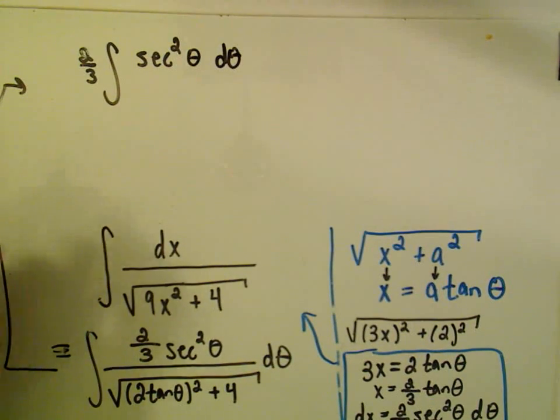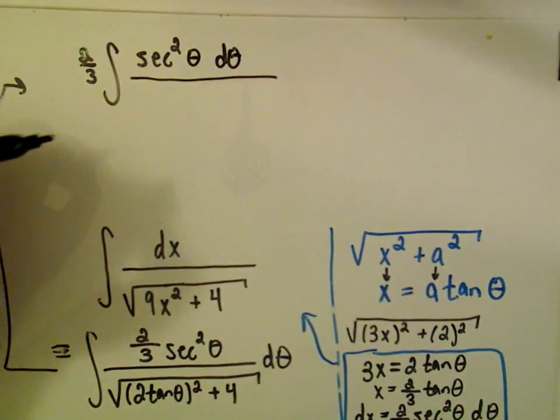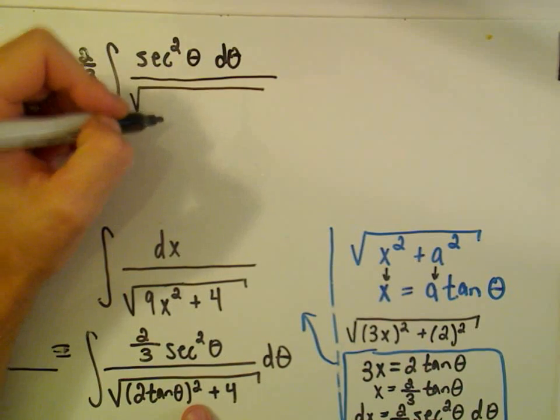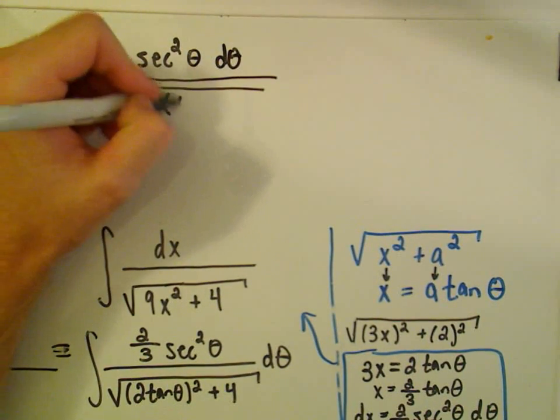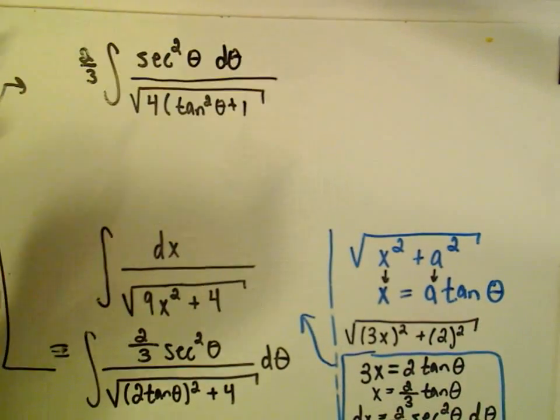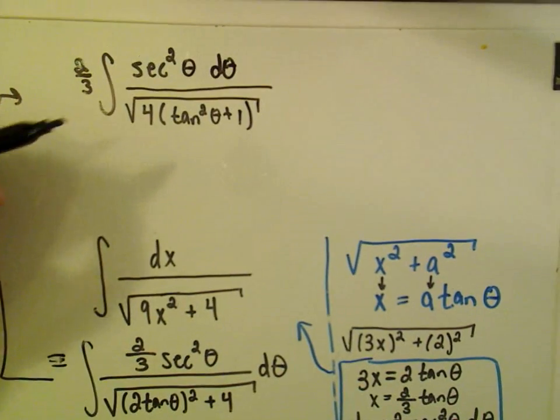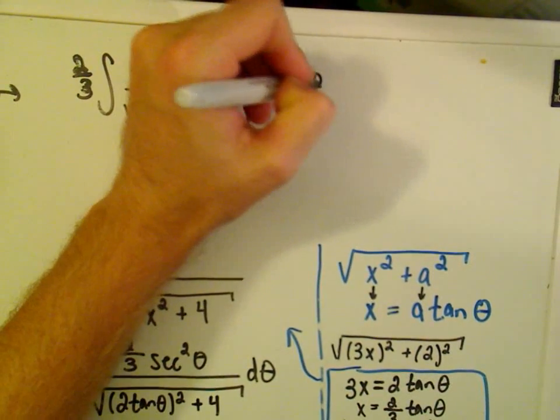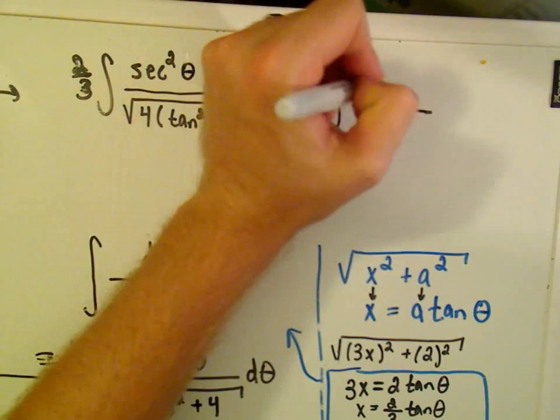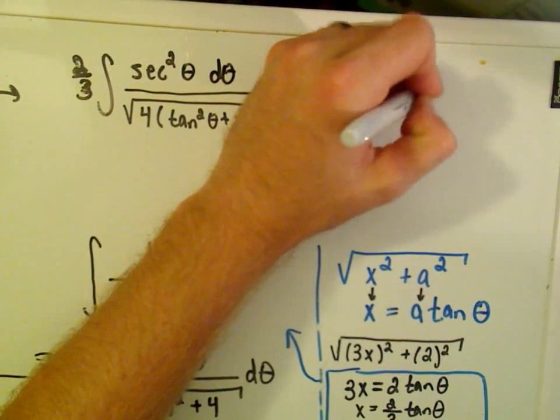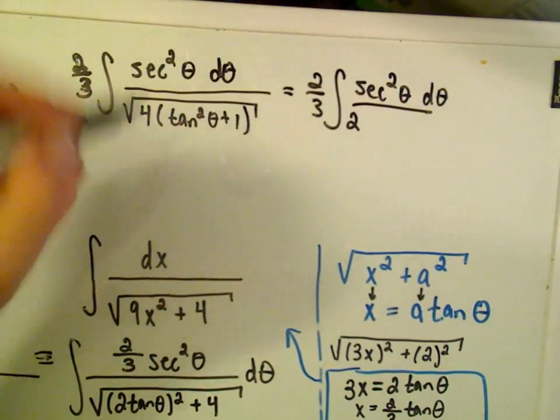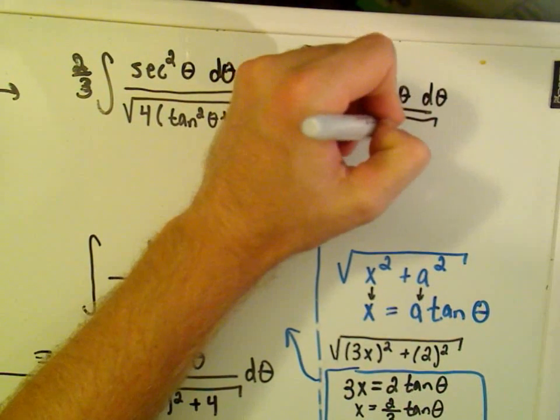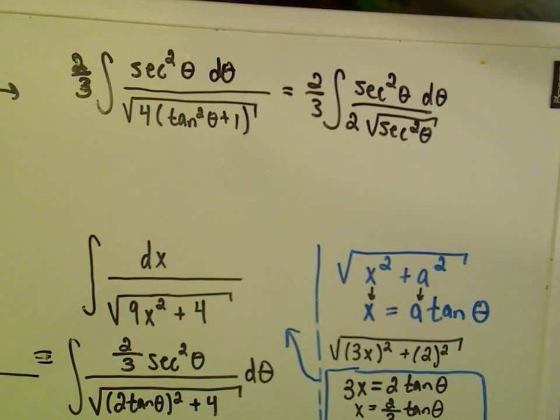So we have 2 thirds secant squared theta d theta. And if we simplify underneath the square root, notice we'll get 4 tangent squared theta plus 4. But I can factor the 4 out front, so I'll still have tangent squared theta plus 1 left over. And now the trick is, the whole point of doing these trig substitutions is getting rid of the square root. So again, I can write this as 2 thirds times the integral. Still on top, I have my secant squared theta d theta. If I pull the 4 out, it's going to come out as a 2. And remember, there's a trig identity for tangent squared theta plus 1. That's just secant squared theta.